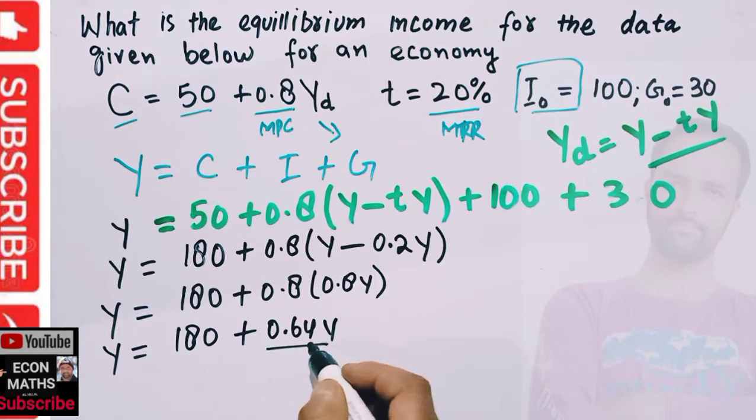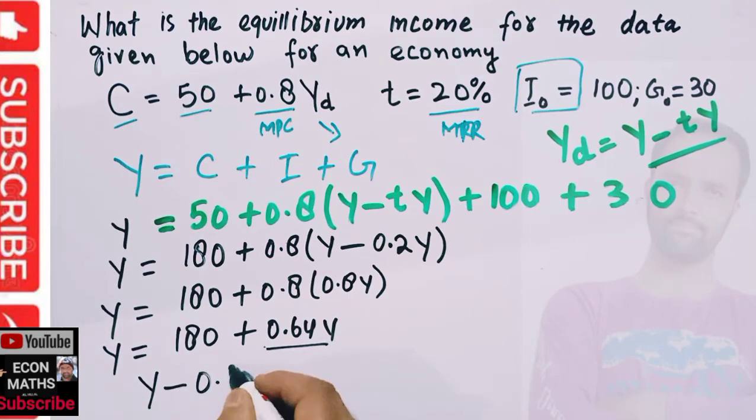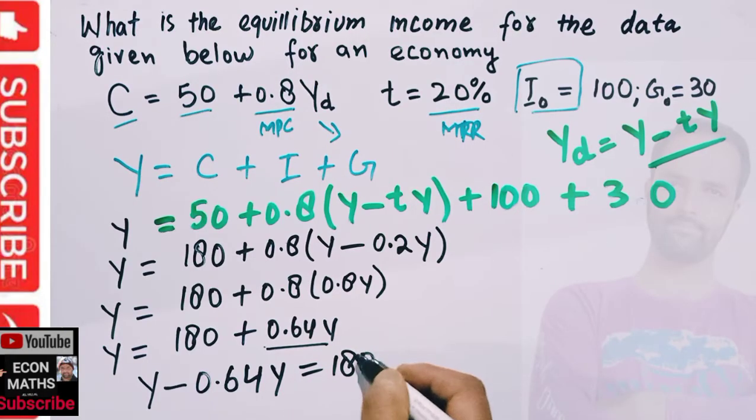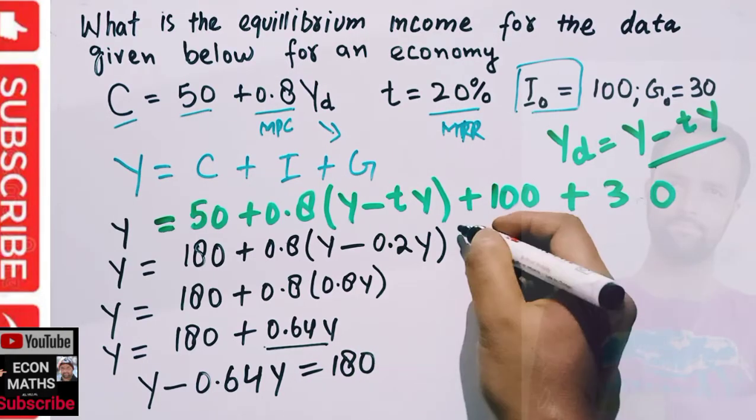Now simply transpose this 0.64Y to the left-hand side, so we have Y - 0.64Y = 180.